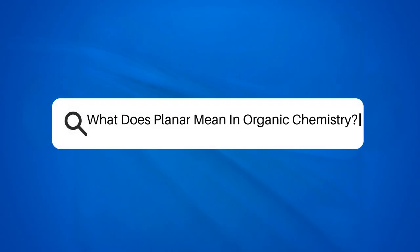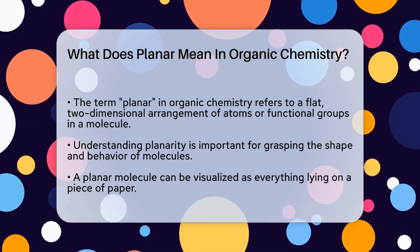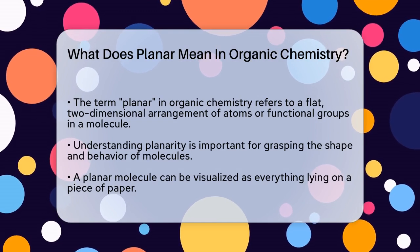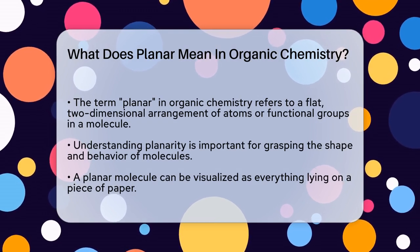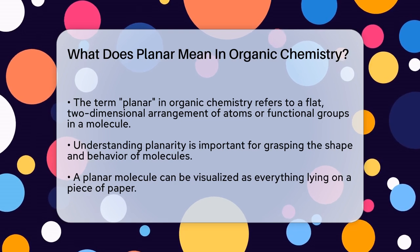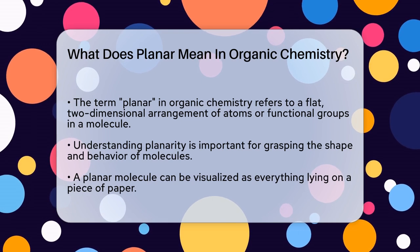What does planar mean in organic chemistry? If you're studying organic chemistry and keep coming across the term planar, you might be wondering what it really means. Let's break it down. In organic chemistry, planar refers to a geometric configuration where all the atoms or functional groups in a molecule lie in the same flat, two-dimensional plane.